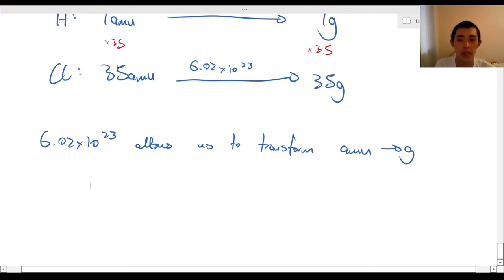So this is a pretty interesting number. 6.02 times 10 to the power of 23 allows us to transform amu, which is super small and hard to handle, into grams, which are very useful because we can macroscopically manipulate it. I can have 35 grams in my spoon. I can't have 35 amu. That'd be literally one atom heavy. It's so crazy. So this is a pretty neat number.